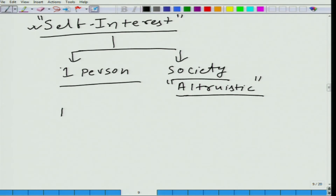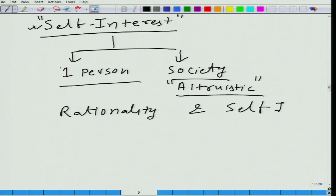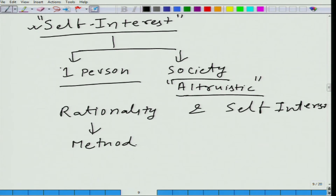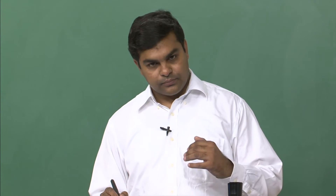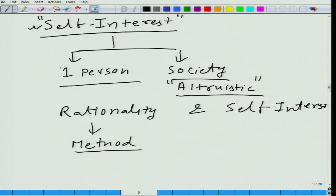Now we have seen rationality and self-interest. Rationality is about method — that your method should be well thought, it should be well reasoned, it should not be guided by emotions, it should not be guided by your fear. It should be well-thought and reasoned — that is what we are talking about when we say method.